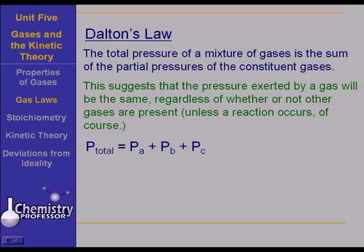In other words, the total pressure of a mixture of gases is the sum of the pressures of the constituent gases. Or, to state it a little bit of another way, the total pressure of a mixture of gases is the sum of the partial pressures of the constituent gases.